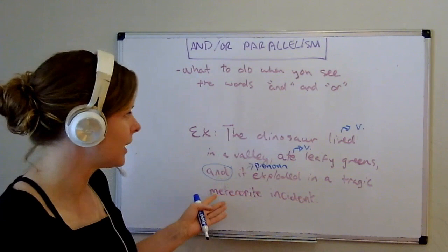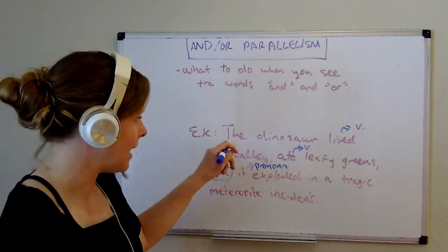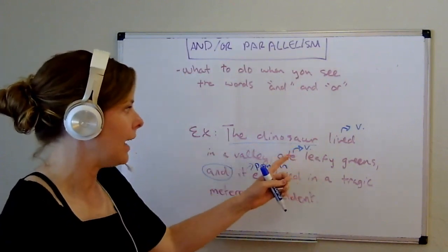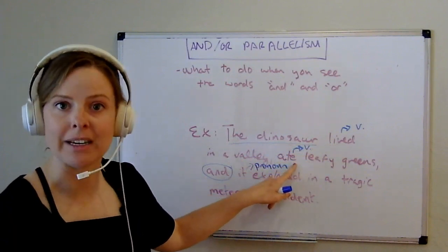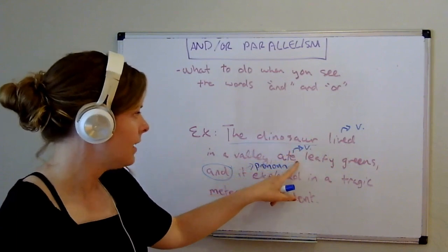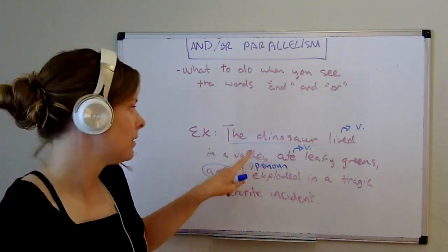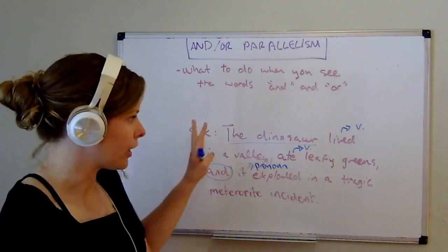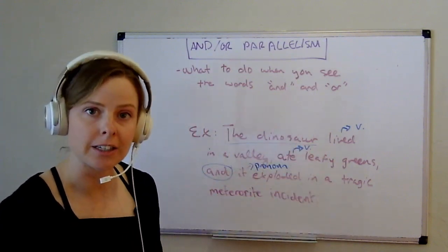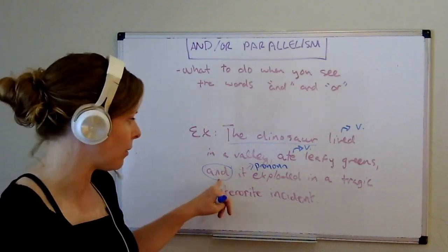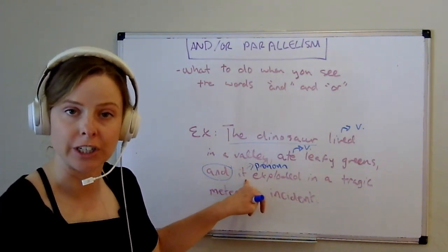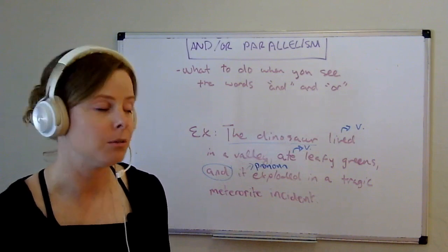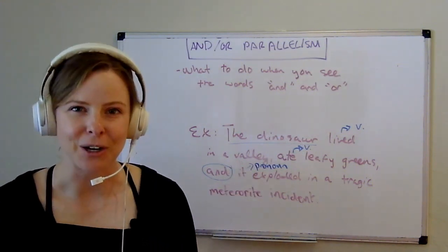You can also think about your stem — the part the author includes before the sentence breaks into a list. Here the stem is 'the dinosaur.' The first two elements make sense with this stem: 'the dinosaur lived,' 'the dinosaur ate.' But the third — 'the dinosaur it exploded' — suddenly repeats the subject, which doesn't make sense. So the general process is: first, notice the word 'and' or 'or'; second, look immediately after and determine the part of speech; finally, look earlier in the sentence for what it should be parallel to and check if they actually match.